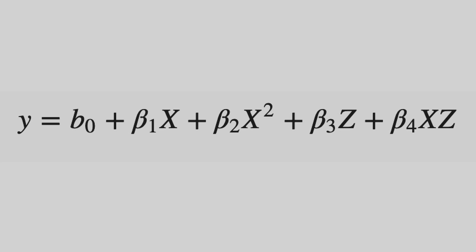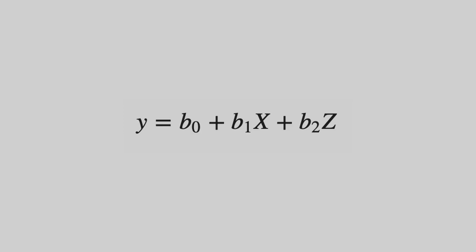Let's say the true model looks like this: y = b0 + b1x + b2x² + b3z + b4xz, which includes an interaction. But let's pretend you actually fit this model: y = b0 + b1x + b2z — in other words, you've missed the two multiplicative effects x² and xz. The additivity assumption states that any multiplicative effects like x² and xz have been modeled. If they haven't been modeled, you're in trouble.